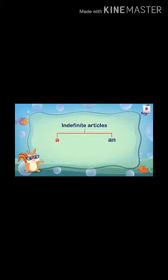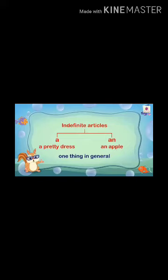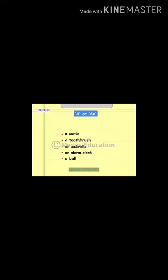'A' and 'an' are the indefinite articles and they are used with singular nouns. You can see one thing in general — indefinite articles 'a' and 'an'. 'A pretty dress' — 'an apple'. This is how we use 'a' and 'an'. The noun 'pretty' starts with P, which is a consonant, so we use 'a' here.